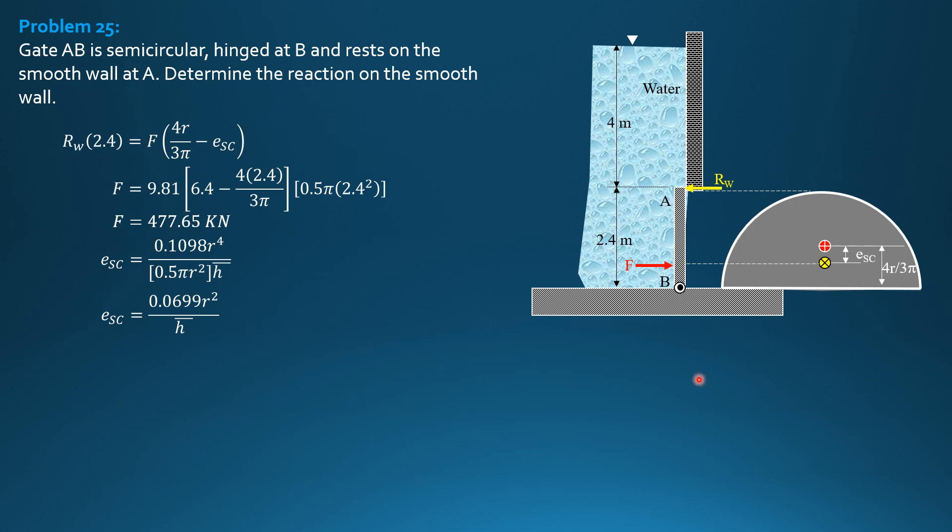If it is a whole circle, remember, it was diameter square over 16 barred H. But, if it is a semicircle, it is 0.0699R square over barred H. Don't worry, just remember the formula for E vertical, which is moment of inertia with respect to the centroid divided by area barred H. Then, you can derive. Do not just memorize. You can memorize them if you derive them.